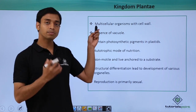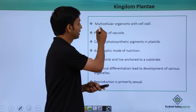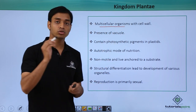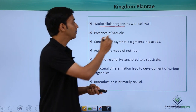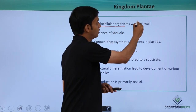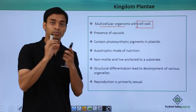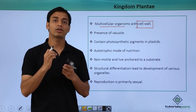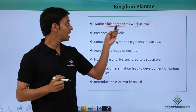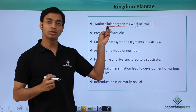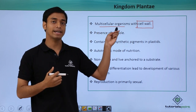Now these plants are all multicellular organisms, and the most important characteristic is that they have got the cell wall — a protective covering which is known as the cell wall. They are multicellular organisms.